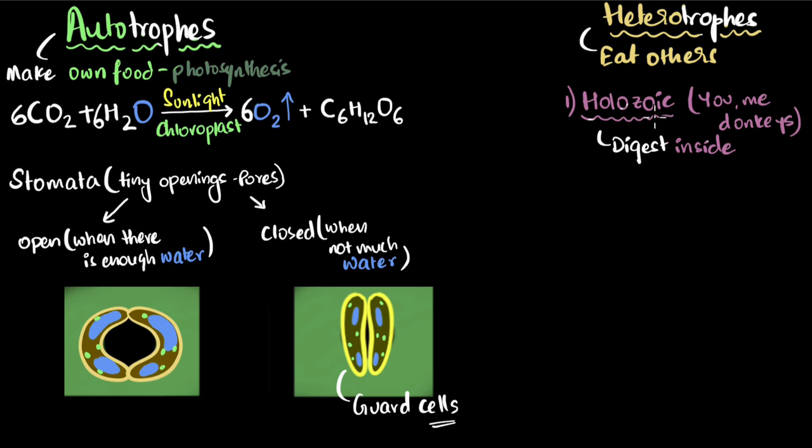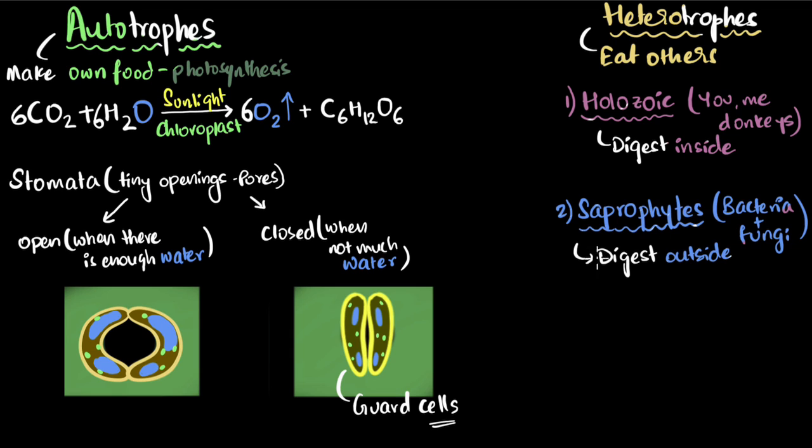But what about bacteria and fungi? They don't have a digestive system. They can't digest the food inside. So you know what they do? They digest the food outside. And such organisms are called saprophytes, mostly bacteria and fungi.